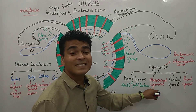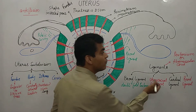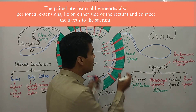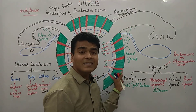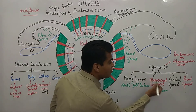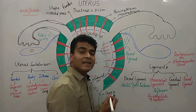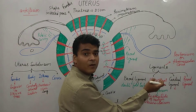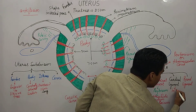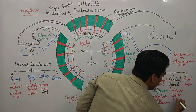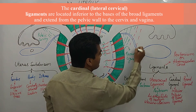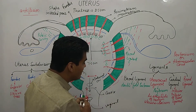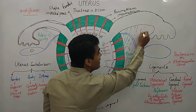The utero-sacral ligament is also a fold of peritoneum, found on either side of the uterus. It lies on either side of the rectum and connects the uterus to the sacrum. The cardinal ligament is found inferior to the base of the broad ligament and extends from the pelvic wall to the cervix and vagina.